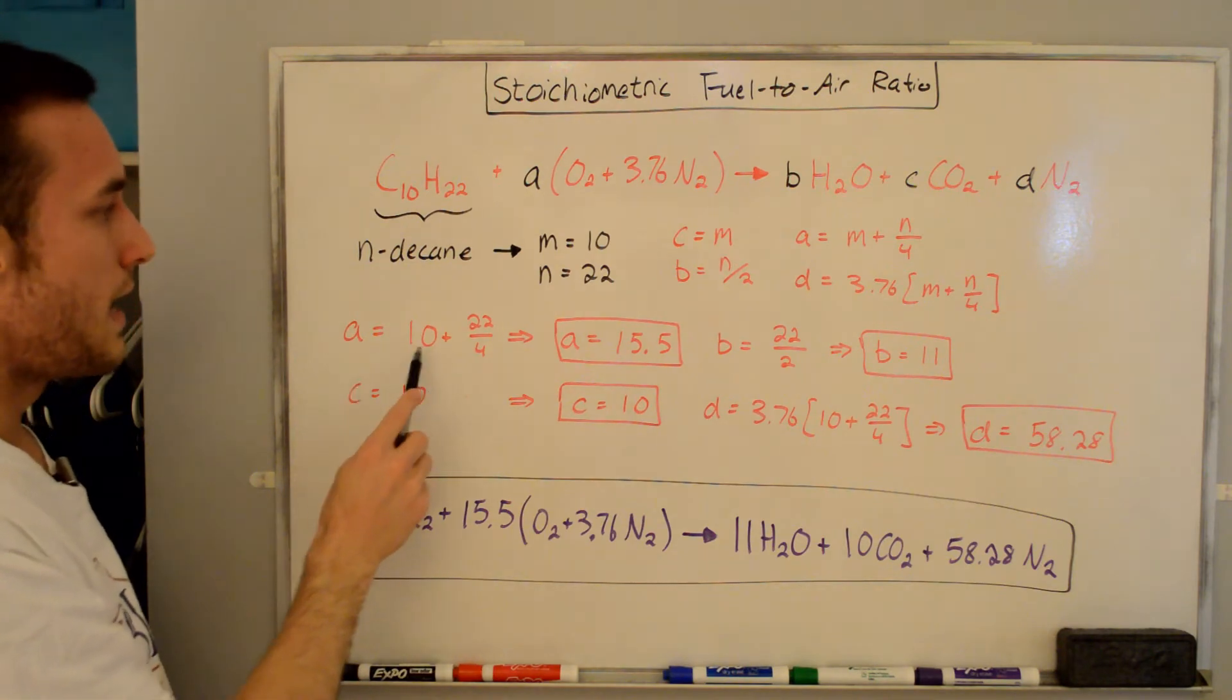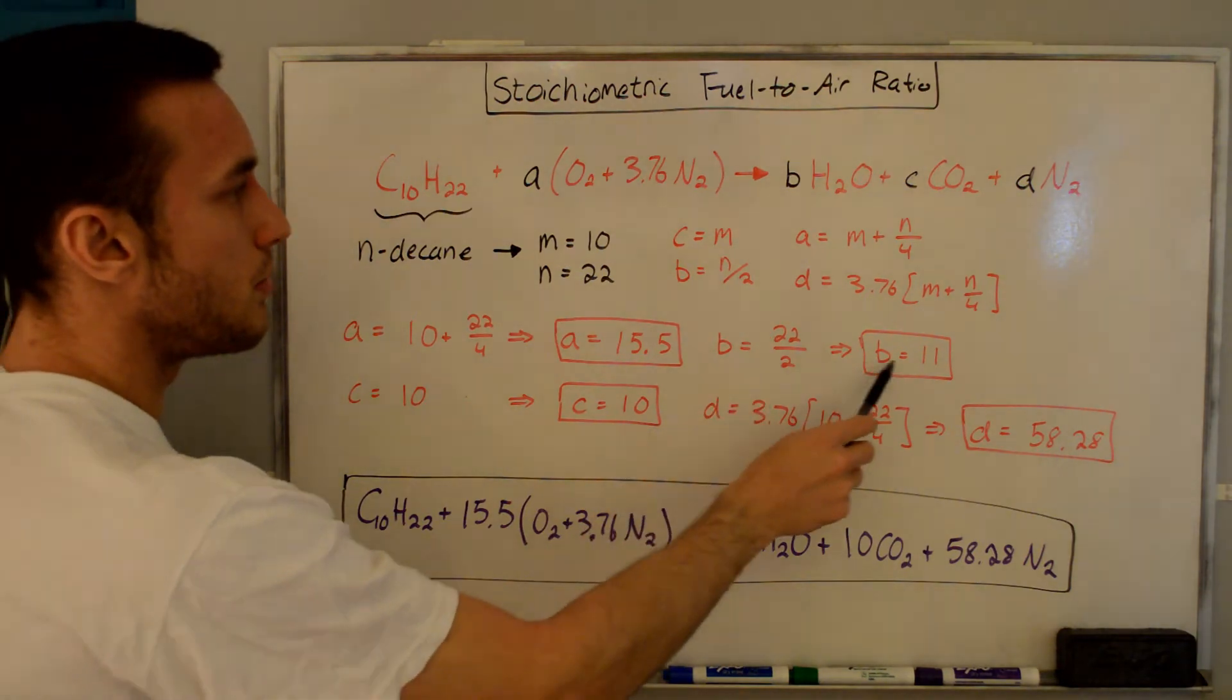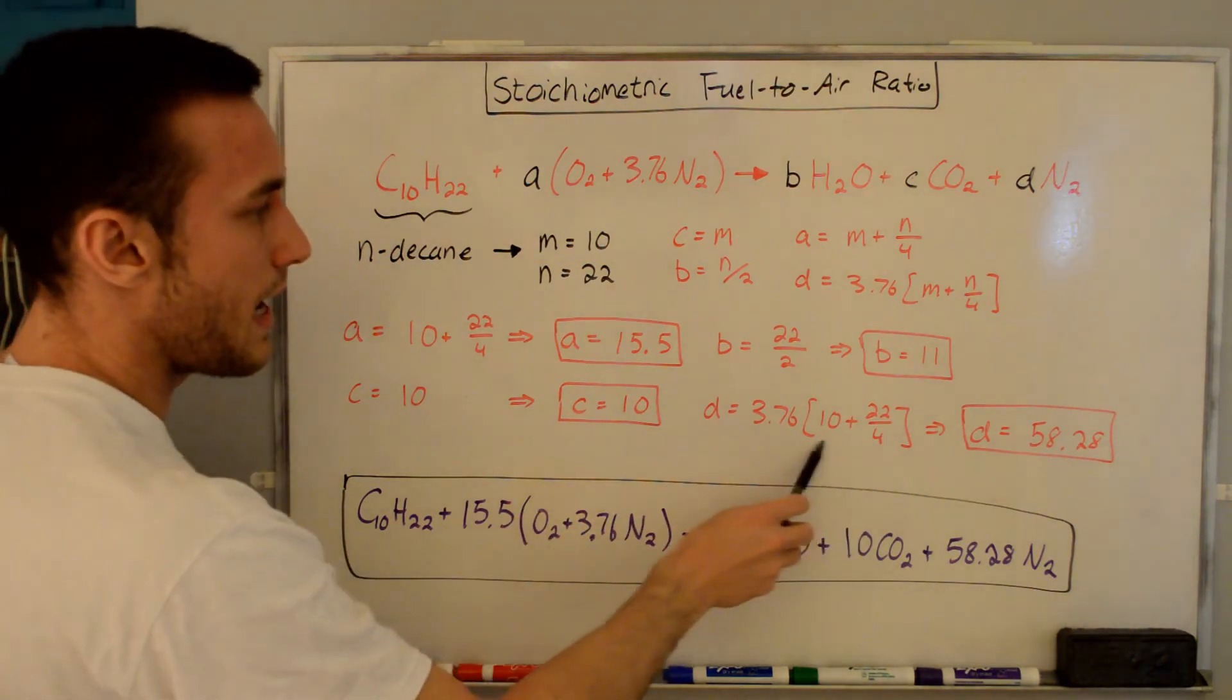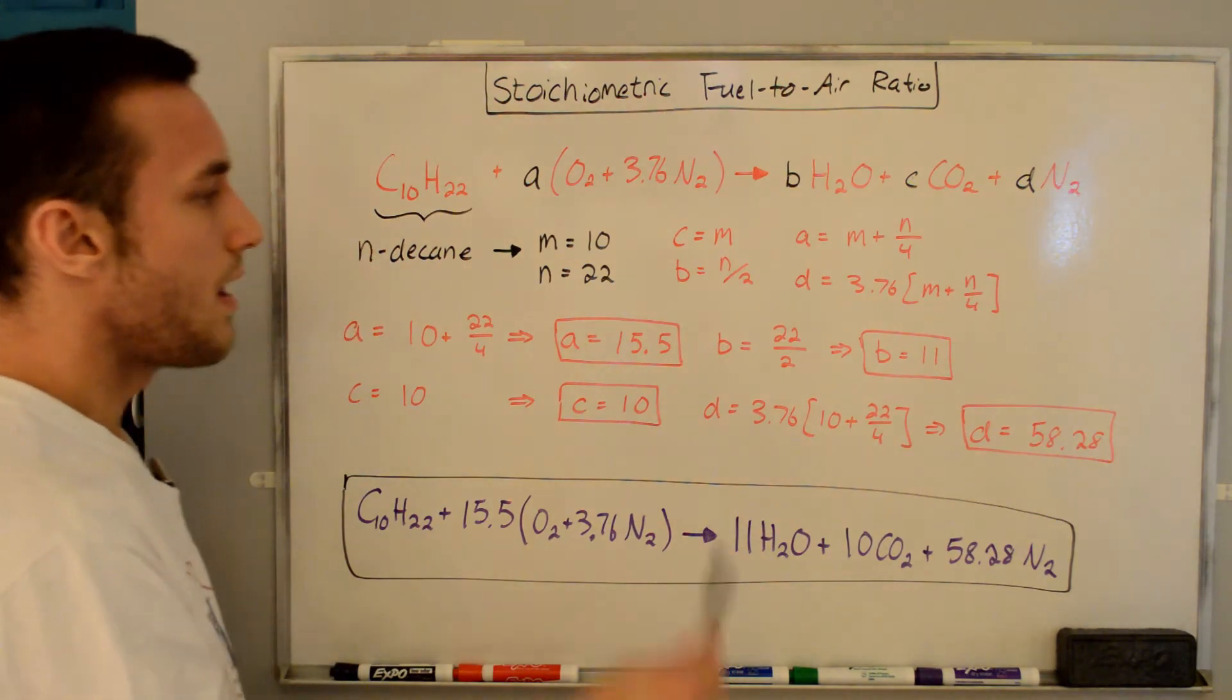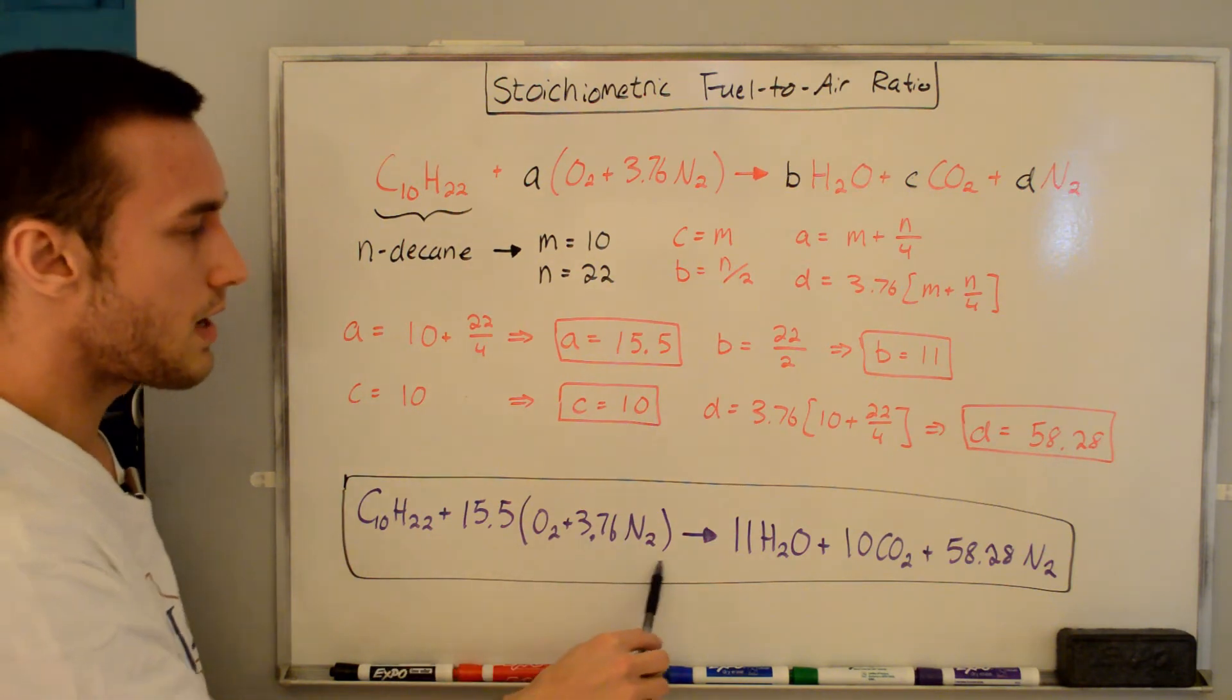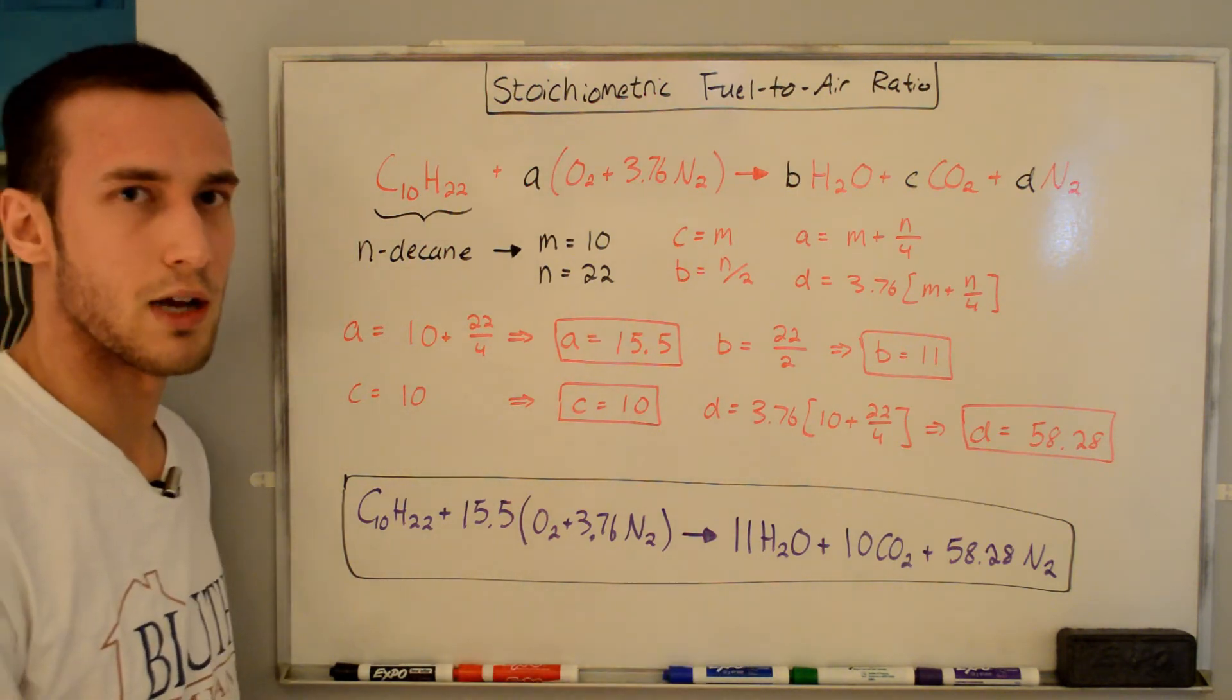So let's solve for A first. We have M plus N divided by 4. So A is 15.5. For B, we have N divided by 2. So B is 11. For C, we just have C is equal to M. So C is equal to 10. And then for D, we just multiply A times 3.76. And we get D is equal to 58.28. And if we plug all these values back up into our global reaction, we get C10H22 plus 15.5 times the standard air gives us 11H2O plus 10CO2 plus 58.28N2. And that's our balanced stoichiometric reaction.